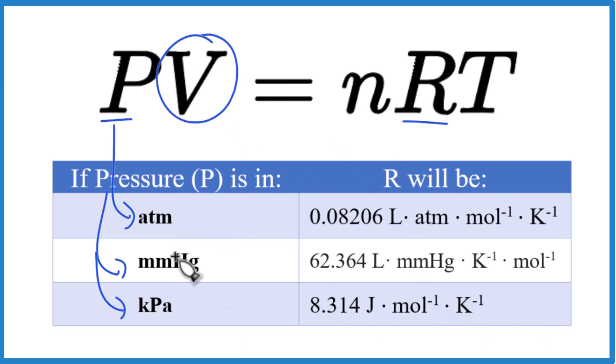But what you'll notice for ATM and millimeters of mercury, we have liters right there in the constant. And so that means that you need to have volume in liters, so everything's going to cancel out.